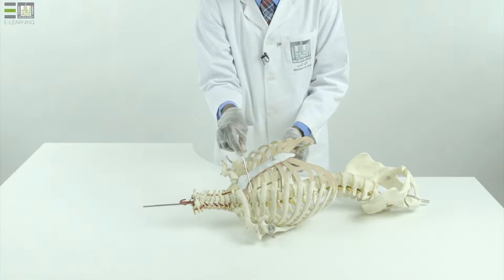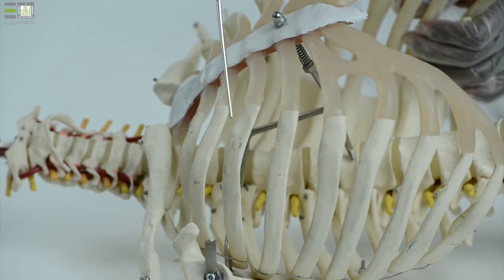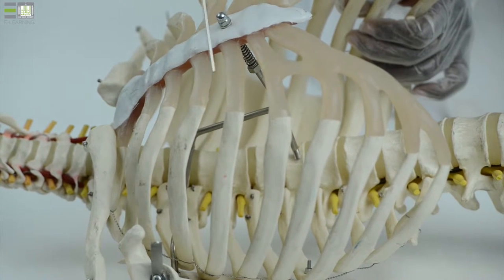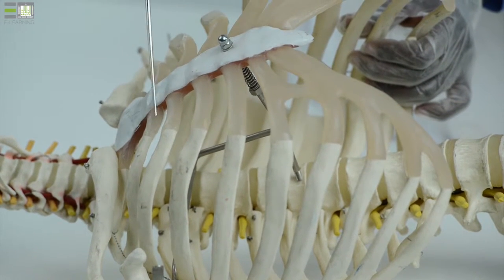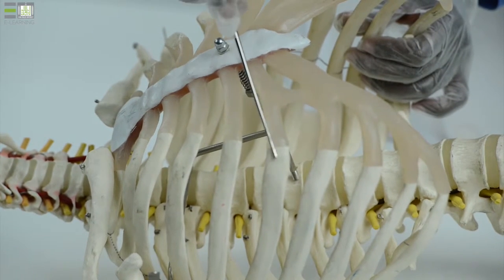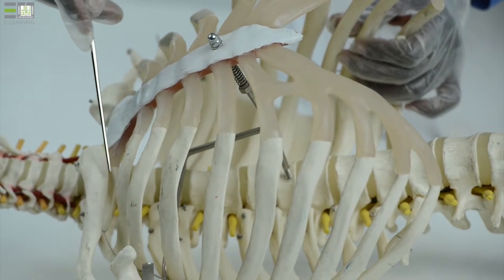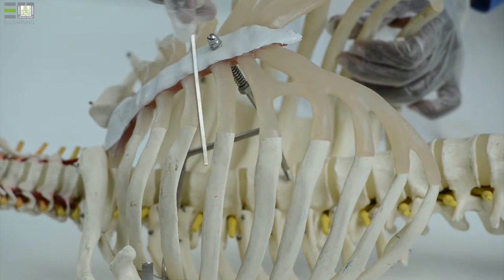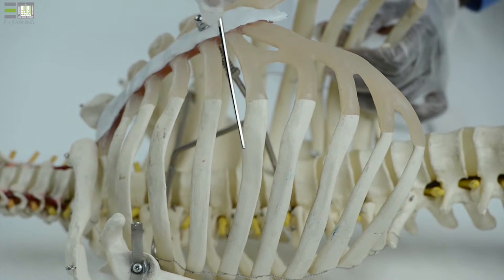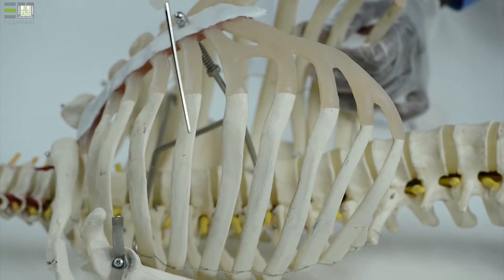The upper seventh ribs—the first, second, third, fourth, sixth, and seventh—their costal cartilages articulate with the lateral edge of the sternum, so they are classified as true ribs. The remaining five are called false ribs.